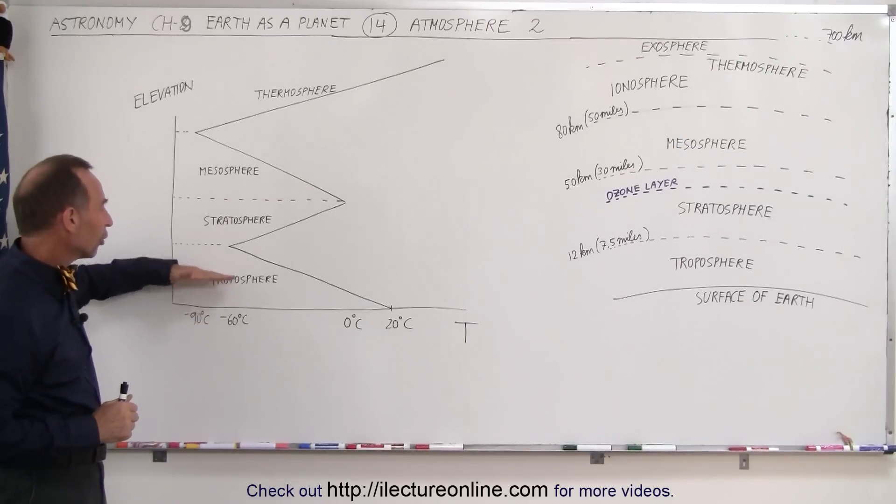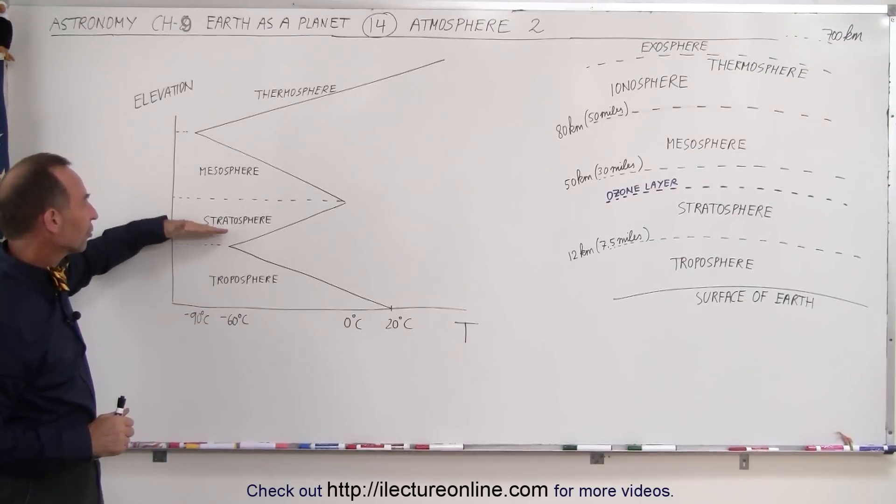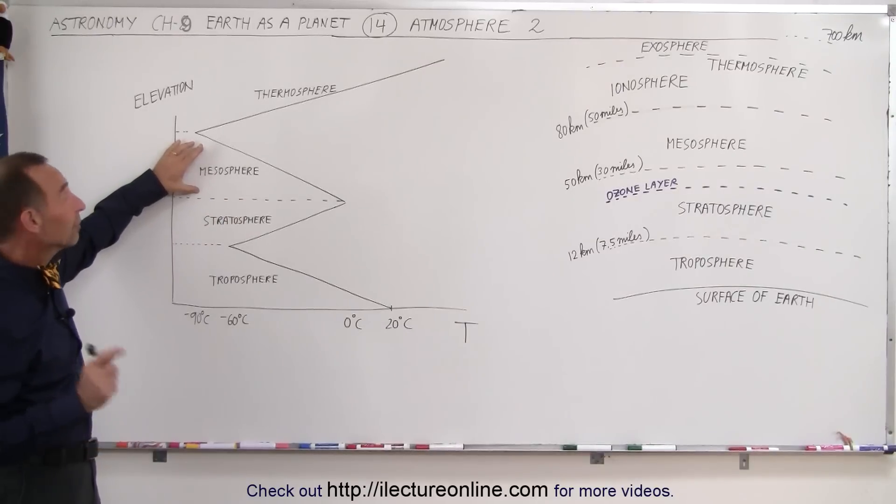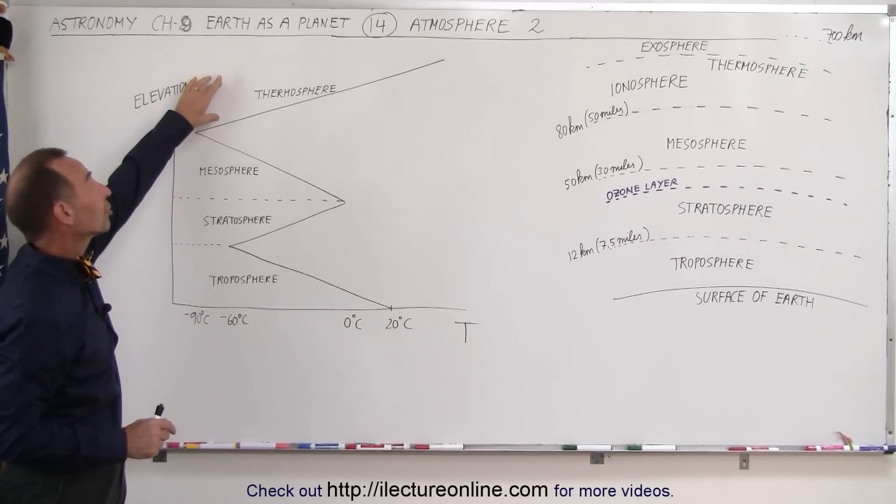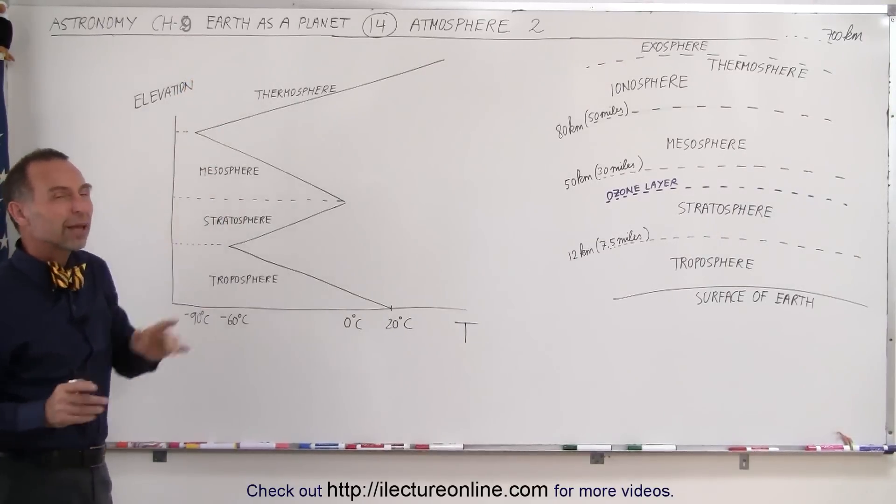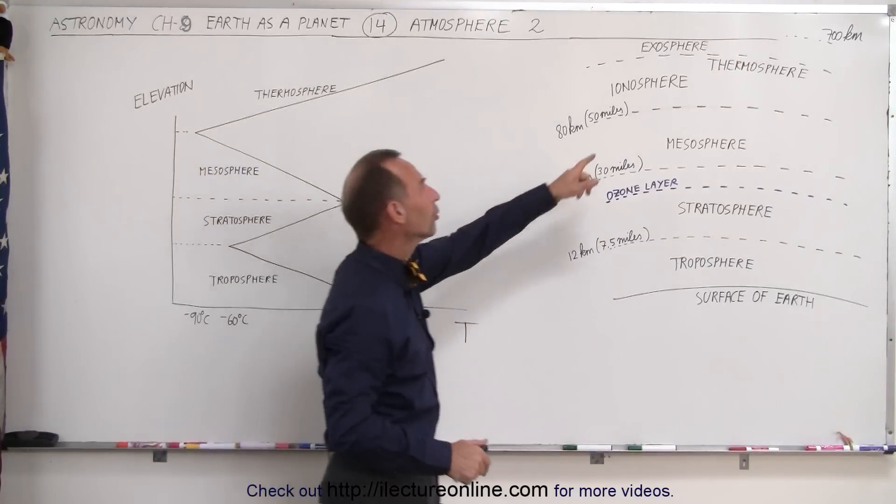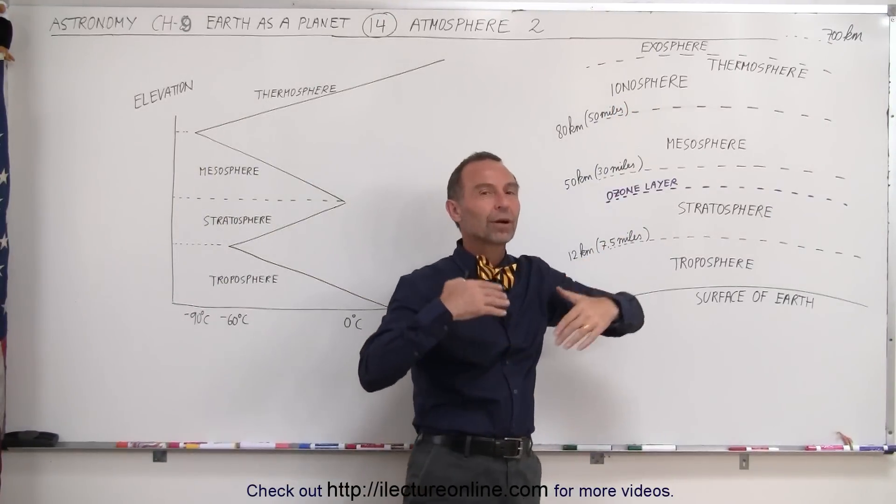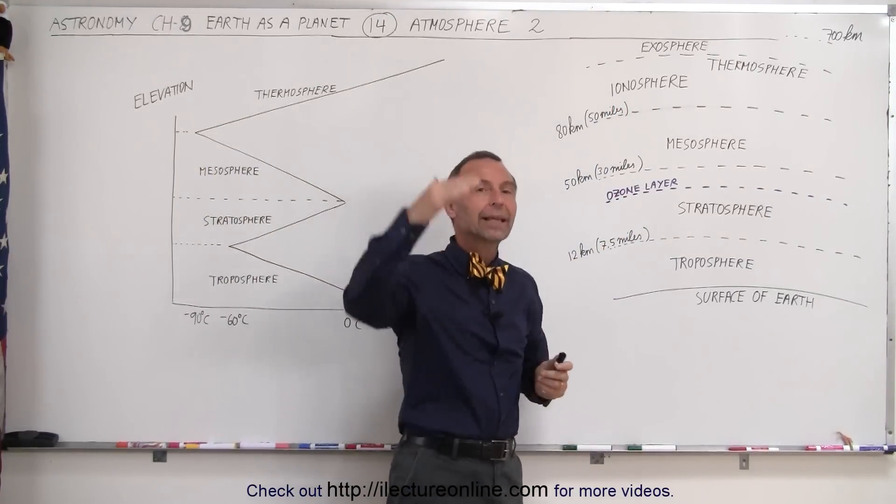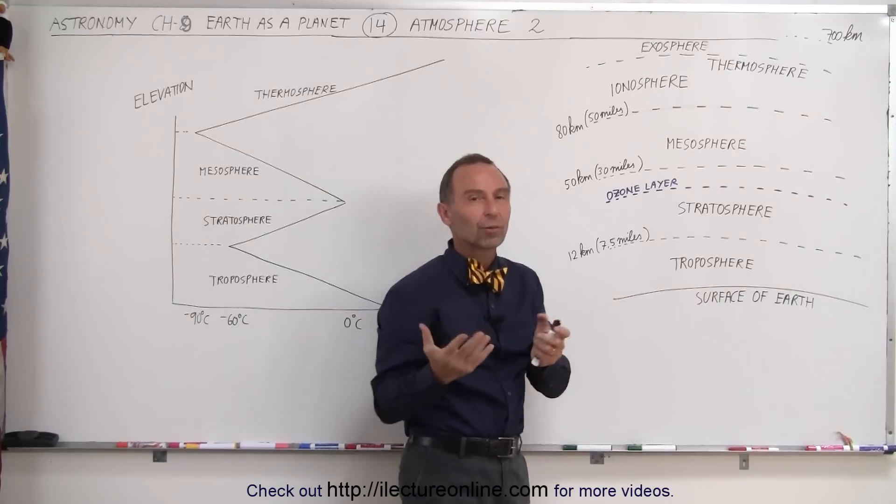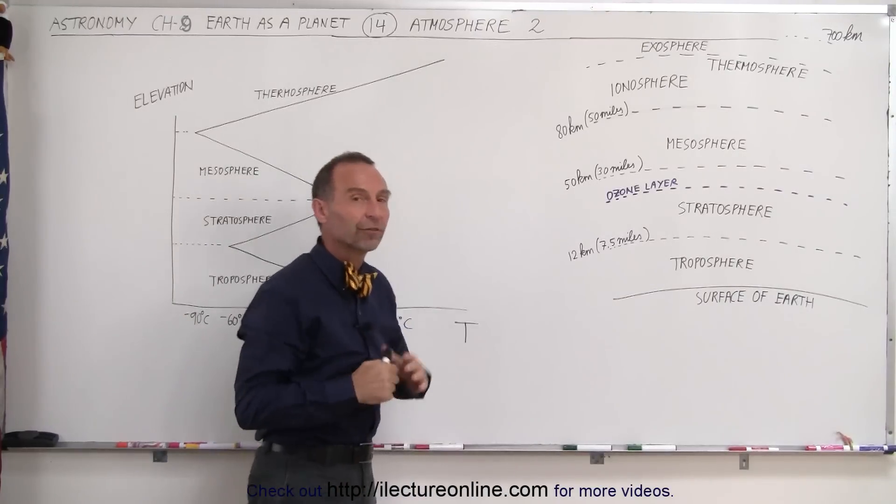The first layer is called the troposphere, the second layer is called the stratosphere, the third layer is called the mesosphere, and the upper layer is called the thermosphere. Sometimes you'll also hear it being called the ionosphere because that's where ions are being generated by the high energy radiation, x-rays and gamma rays that enter our atmosphere from outer space.